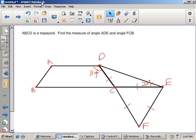Okay, today we're going to learn how to find missing angle measures in more than one shape. So I'm going to read the directions first. ABCD is a trapezoid and I need to find the measure of angle ADE and angle FCB.